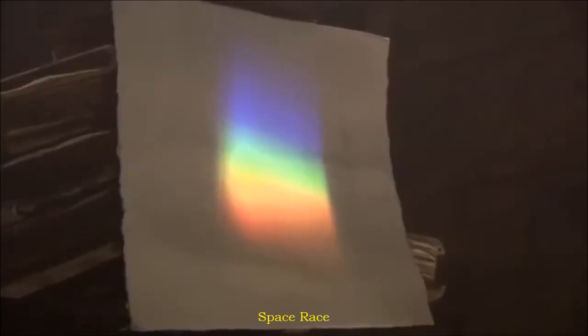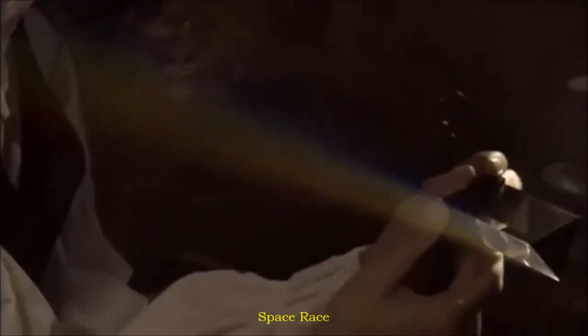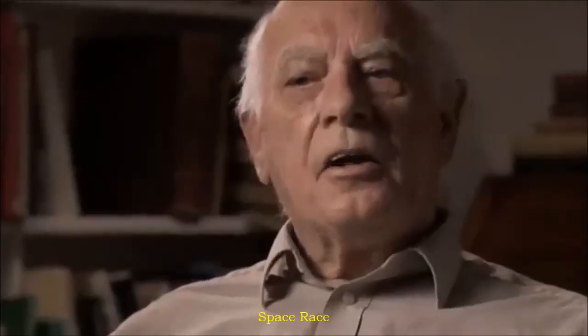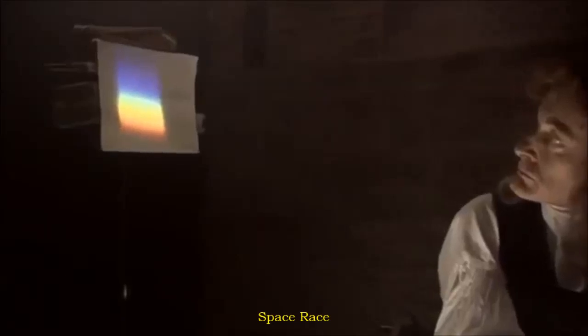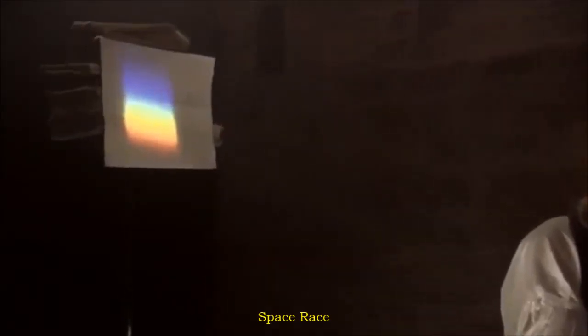He takes a look at light itself. Newton found that white light was in fact composed of all these different colors, the colors of the rainbow. As white light passes through a glass prism, it bends or refracts, breaking up into the colors of the rainbow.